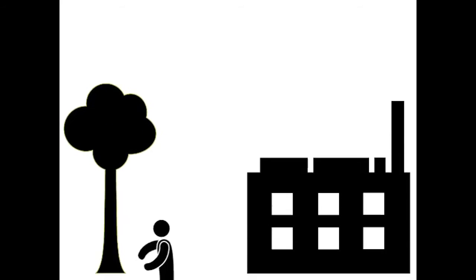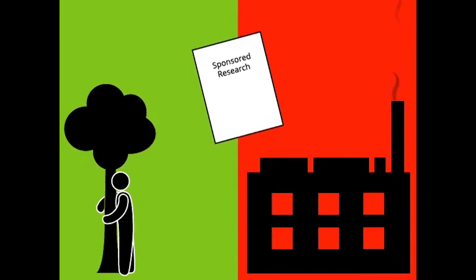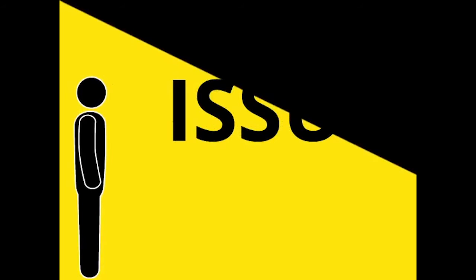In some cases, bias is intentional. A group with its own agenda may sponsor research or information, and the sponsorship may influence the results. Bias can also be unintentional. A writer's perspective may prevent him or her from being able to see all sides of an issue.